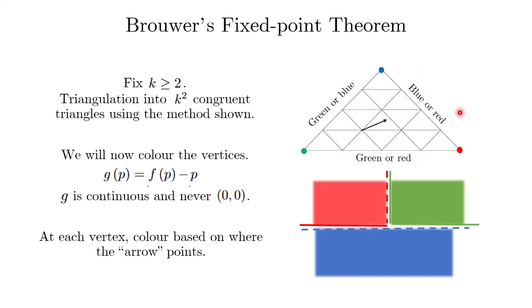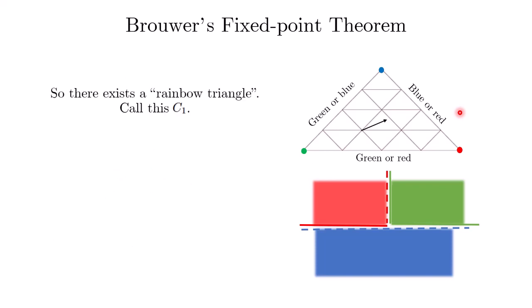What we have shown is that the coloring on the triangulation satisfies the hypothesis of Sperner's lemma. We can apply Sperner's lemma to conclude that there exists a rainbow triangle, an elementary triangle with all three vertices of different colors. Let us call this rainbow triangle C₁.